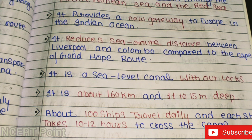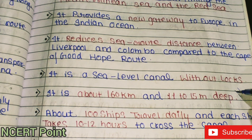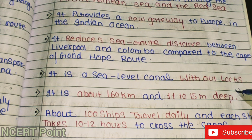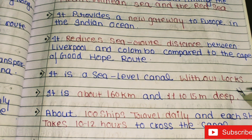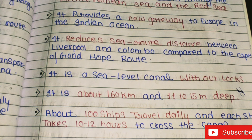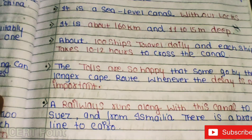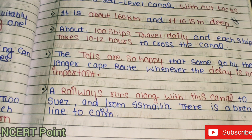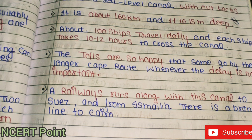About 100 ships travel through the Suez Canal daily, and each ship takes 10 to 12 hours to cross the canal. The tolls are so high that some ships take the longer Cape route when delay is not important. A railway line also runs alongside the canal.